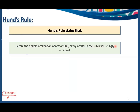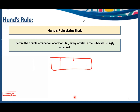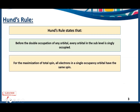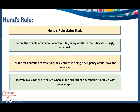Hund's Rule states that before the double occupation of any orbital, every orbital in the sub-level is singly occupied. For example, if we have a P subshell, the P subshell has three further orbitals. We need to fill every orbital with a single electron first, and then pair them, because electrons prefer to remain unpaired as far as possible. For the maximization of total spin, all electrons present should have the same spin, and the spin should be parallel in every sub-orbital.